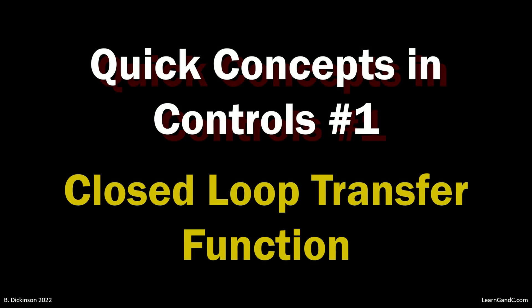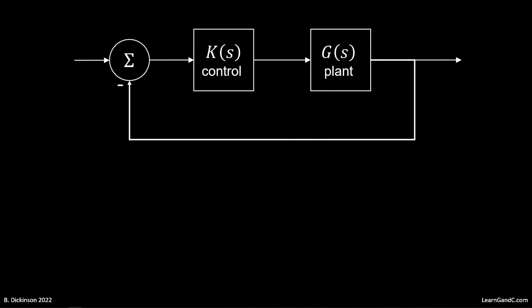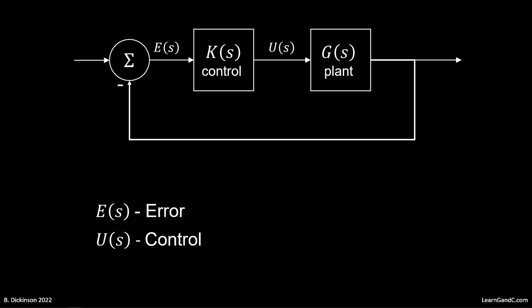Quick concepts in controls. Number one, the closed-loop transfer function. Here's a classical feedback loop where the error signal is input to the controller, which outputs the control signal, which affects the plant, producing a response output, which is fed back and compared against the command input.